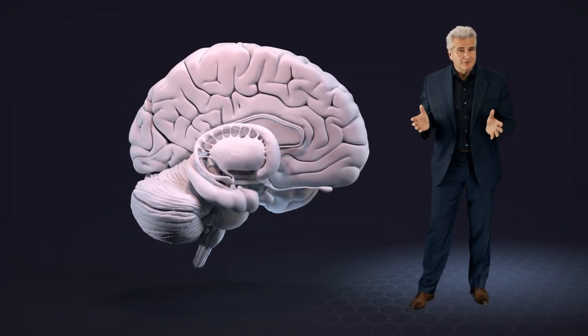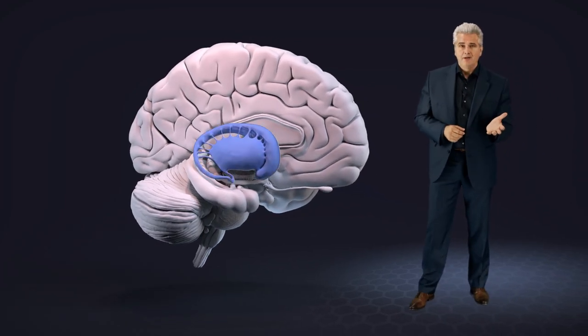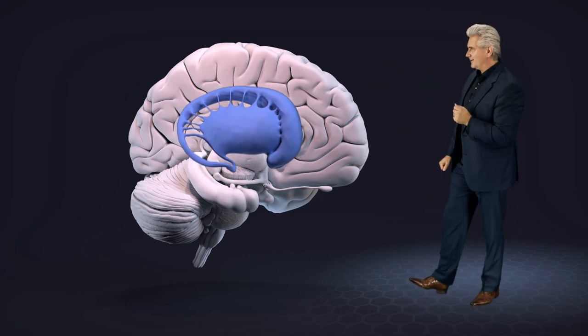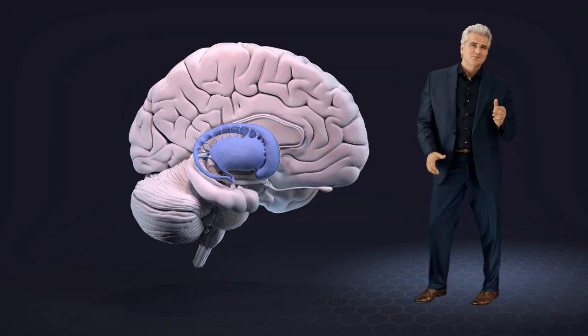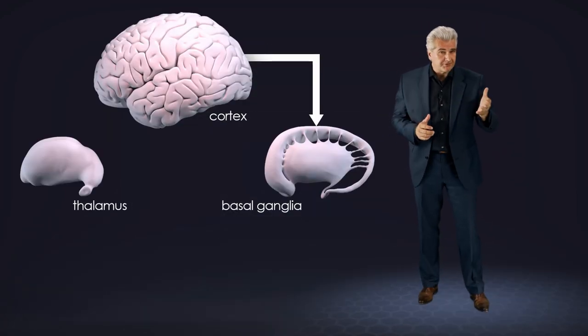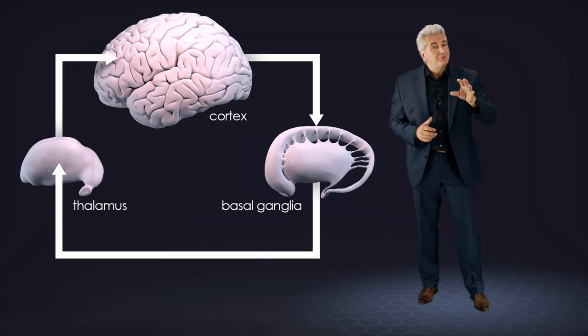The last part of telencephalon is called the basal ganglia. The basal ganglia work in concert with cortex, thalamus and brainstem.